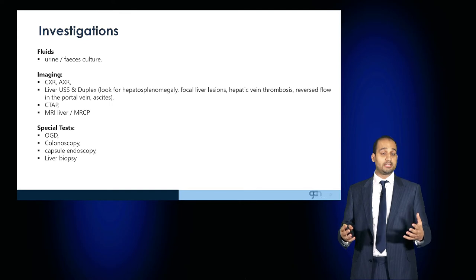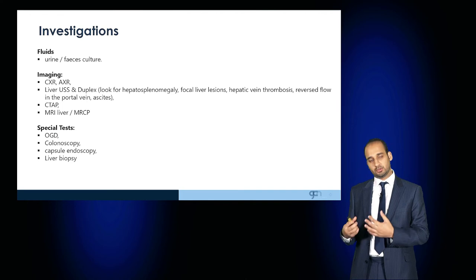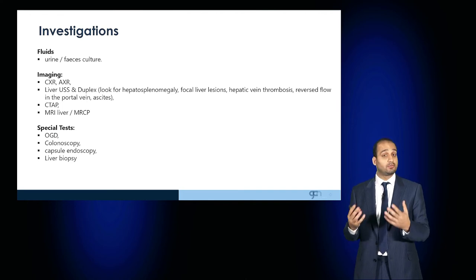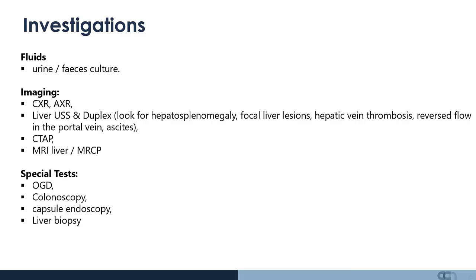Additionally, urine and faeces may be sent for analysis. Imaging is required, particularly liver imaging in the form of an ultrasound or duplex ultrasound looking for organomegaly or focal hepatic lesions, a CT scan for more detail, and if identifying specific lesions, MRCP and MRI of the liver would be helpful. If there is evidence of portal hypertension, OGD and colonoscopy would help determine whether the patient is at risk of variceal bleeding.